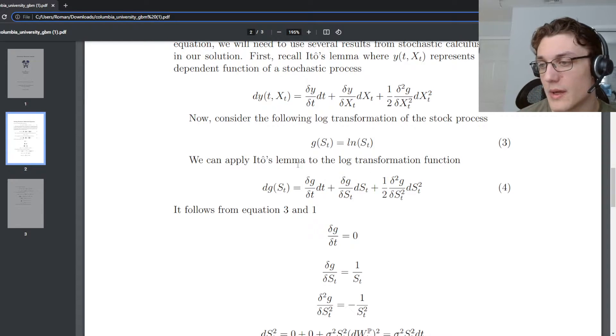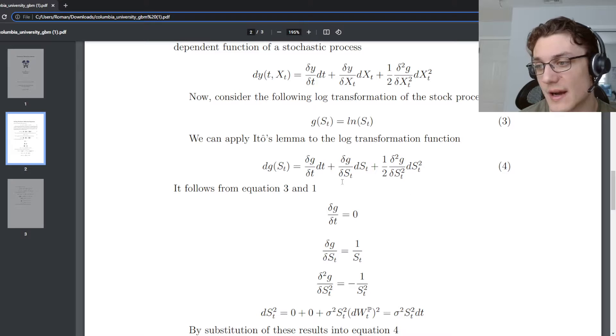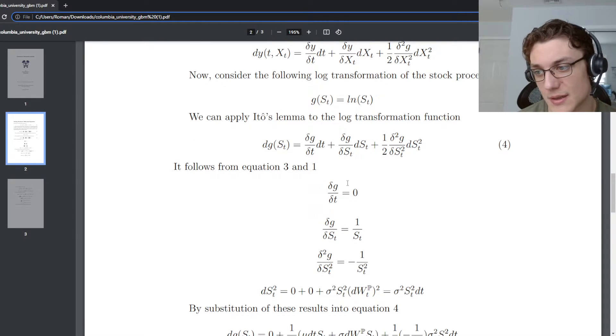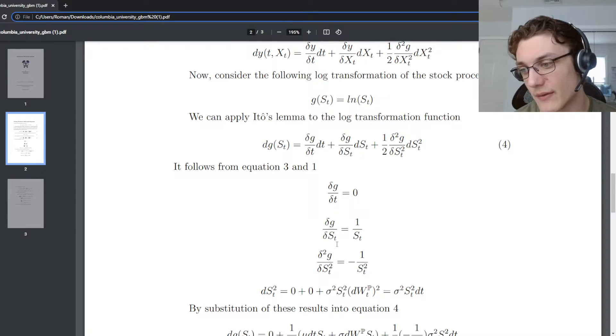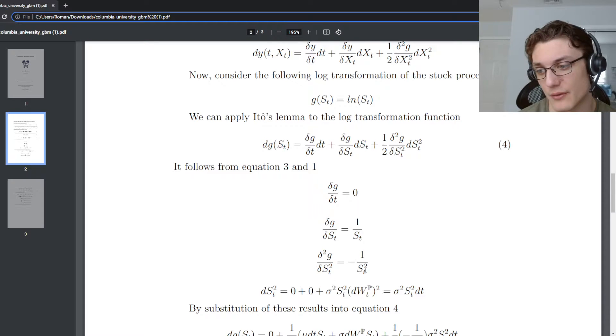We know the function g. So we can find these partial derivatives relatively easily. We take the partial derivative with respect to time, no time terms, that's zero. Take the partial derivative with respect to the stock price process, that's one over S of t, basic derivative of a log. Take the second order derivative with respect to the stock price process, negative one over S of t squared.